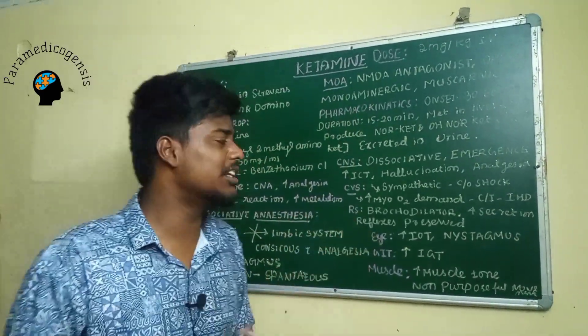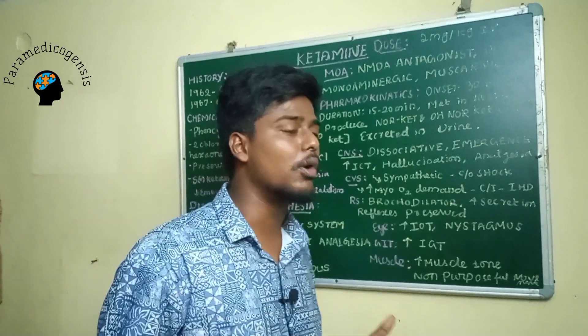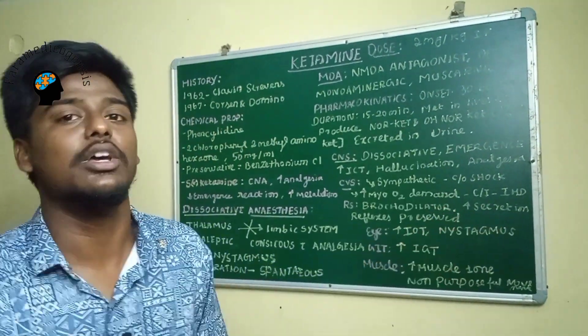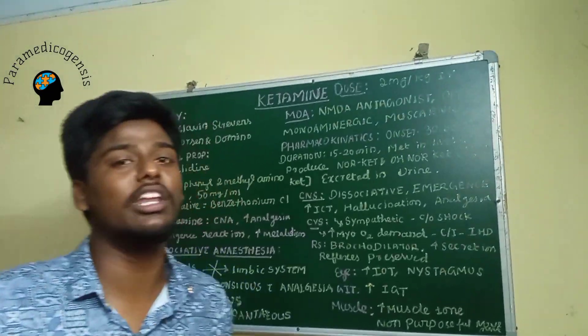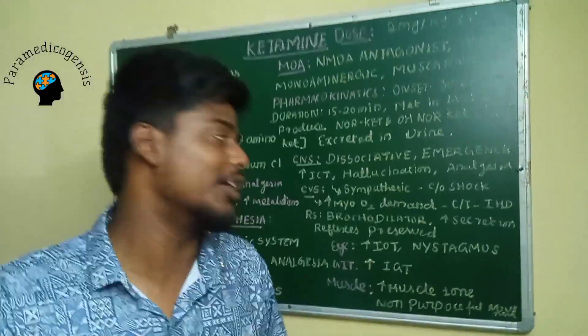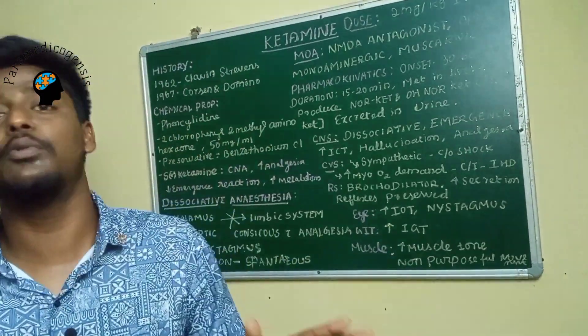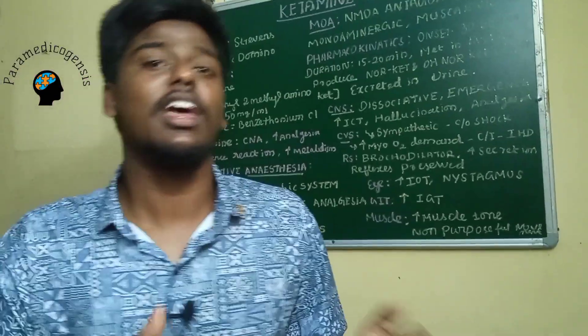In the respiratory system, ketamine has a potent bronchodilator effect but increases secretions, so it is used with anticholinergic drugs like atropine and glycopyrrolate. The laryngeal and pharyngeal reflexes are well preserved, making it useful in full stomach patients and rapid sequence induction to prevent pulmonary aspiration.